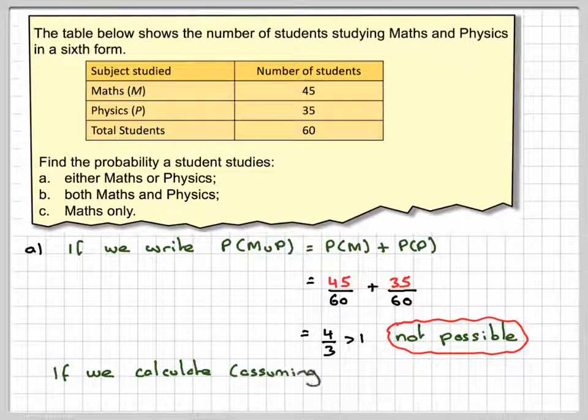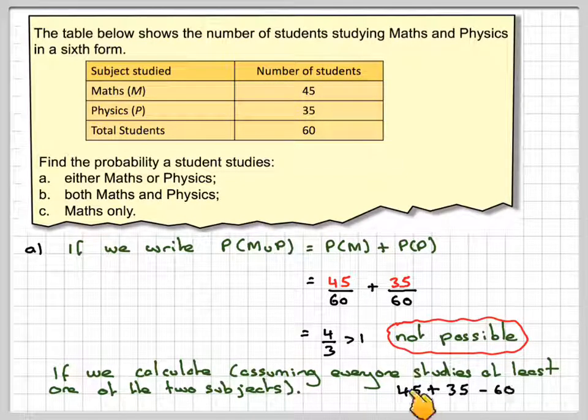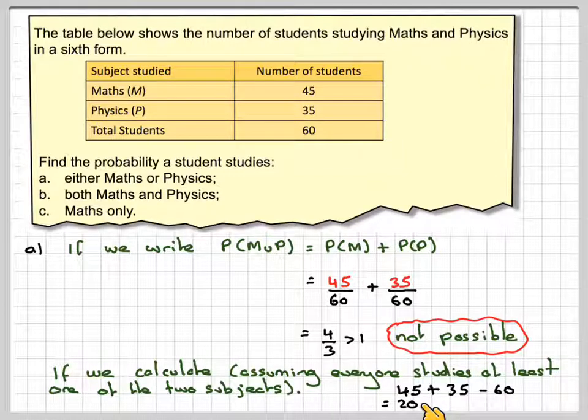So if we calculate, assuming everyone studies at least one of these two subjects, then we go 45 plus 35 minus 60 is equal to 20. So what's happened is that we have 20 students who are actually studying both maths and physics.